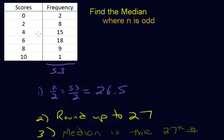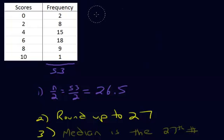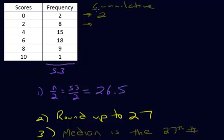So how do we find the 27th number in this set? Let's keep track of how many numbers we've gone through so far. Think of these as students — we lined all the students in a row, starting with the lowest score up to the highest score. After going through all the 0s, we've gone through the first two students, and those are all the ones with 0s. So we've gone through two students. After going through all of the students with 2s — this is like our cumulative column — how many students have we gone through? Well, the 2 from before plus the 8 current ones with 2s, so we've gone through 10 students so far.